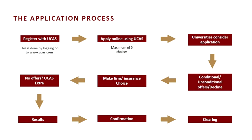In terms of sending your application: if you're applying for Oxford, Cambridge, medicine, veterinary, or dentistry, that would need to be sent by the 15th of October. The date of equal consideration for all universities is the 15th of January. If you meet that deadline, universities will be looking at your application. If you send it after that, they can't guarantee all universities will be in a position to consider it.